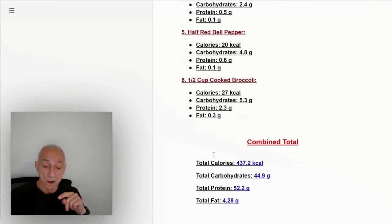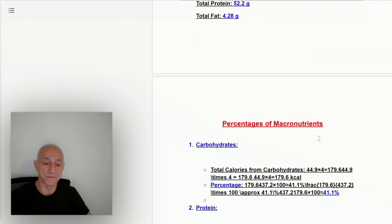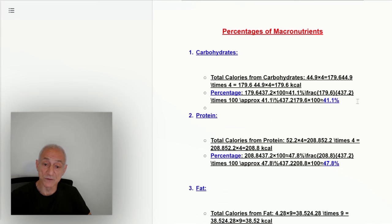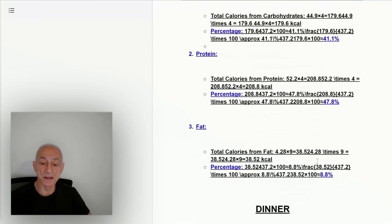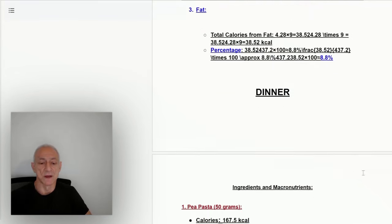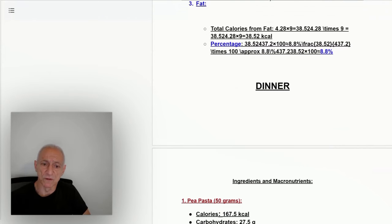So the combined total is 437 calories, 45 grams carbs, 52 grams protein, and 4.4 grams of fat. The percentage of macronutrients for my lunch: carbohydrates 41%, protein is about 48%, and fat is about 9%. Again, like I said earlier, give or take a percentage point. It's close enough. Nothing is perfect, but it's close enough.